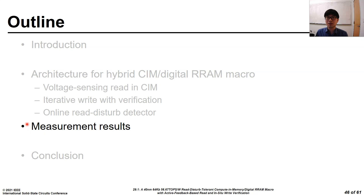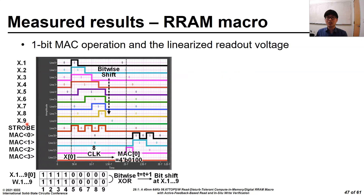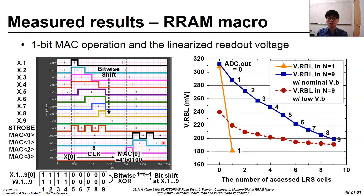Now I will show the measurement results of the proposed RRAM macro. This measured result shows the 1-bit MAC operation over the bitwise shift of the input. Since the 1-bit MAC operation consists of bitwise XOR and accumulation, the initial output is 4, and the output decreases over the bitwise shift of the input. Owing to input-aware current control with the feedback amplifier, the proposed RRAM macro achieves the linear readout voltage. The x-axis is the number of accessed LRS cells, and the y-axis is the readout voltage. M means the number of accessed RRAM cells. Compared to the nonlinear readout voltage, the proposed readout circuit achieves a 5.7 times wider sensing margin. In addition, the proposed readout circuit provides more sampling margin in the case of a lower number of accessed RRAM cells.